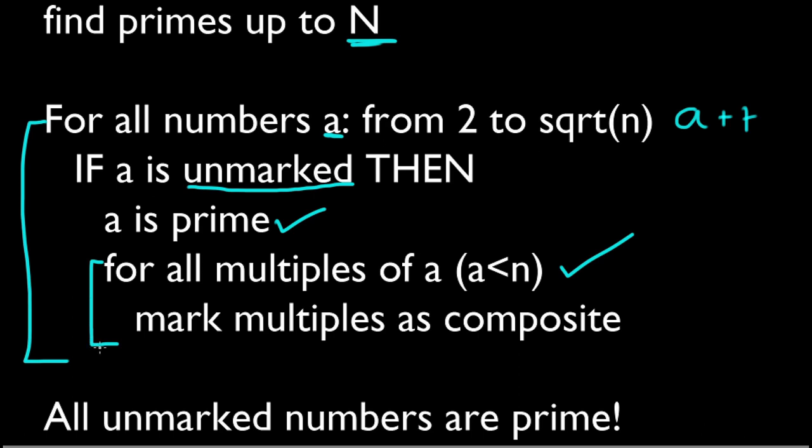This marking off of multiples is also a loop. So it's important to notice here that we have a nested loop. We have a loop inside a loop. Here is an example of this algorithm in action I wrote in JavaScript below.